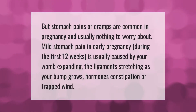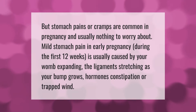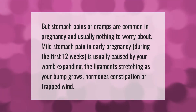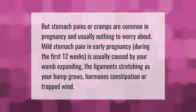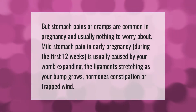Stomach pains or cramps are common in pregnancy and usually nothing to worry about. Mild stomach pain in early pregnancy, during the first 12 weeks, is usually caused by your womb expanding, the ligaments stretching as your bump grows, hormones, constipation, or trapped wind.